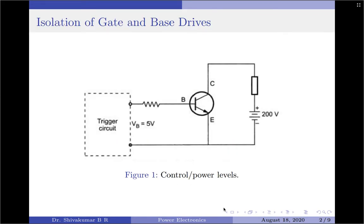Let us look into the first scenario here. As you can see, we have a simple BJT switch here which uses a triggering circuit and we have a 200 volt supply across the collector to emitter. When you look at the voltage levels, the triggering circuitry usually operates at a lower voltage level compared to the collector to emitter voltage. Now, by some means, if the collector to emitter gets shorted, this can directly impact in a negative way on the triggering circuit also, which can damage the triggering circuit. Therefore, we say there is a need for isolation of both gate and base drives for a transistor.